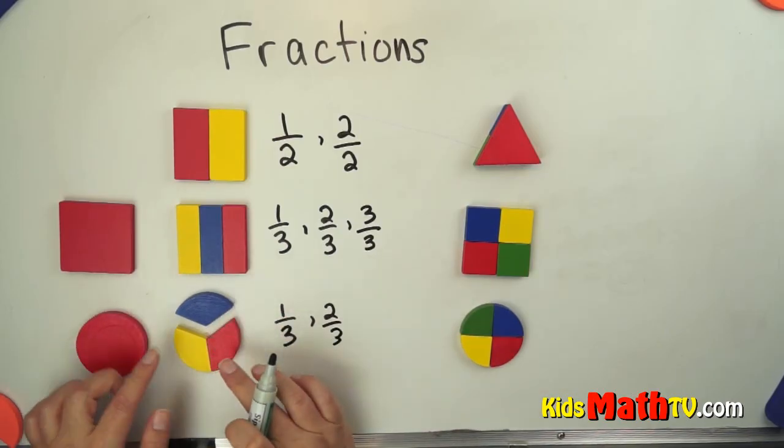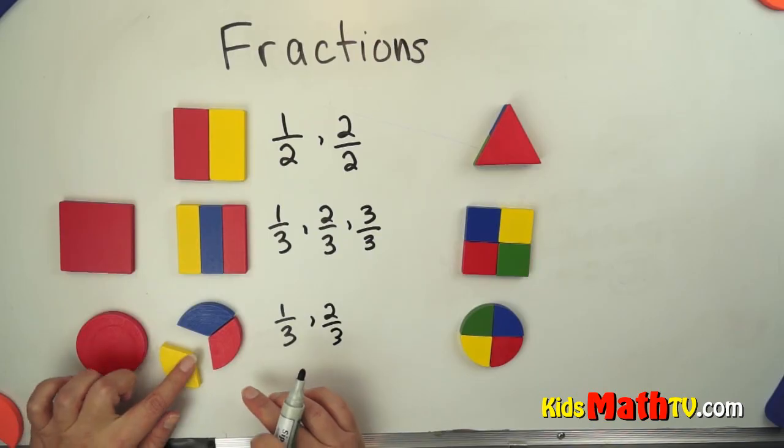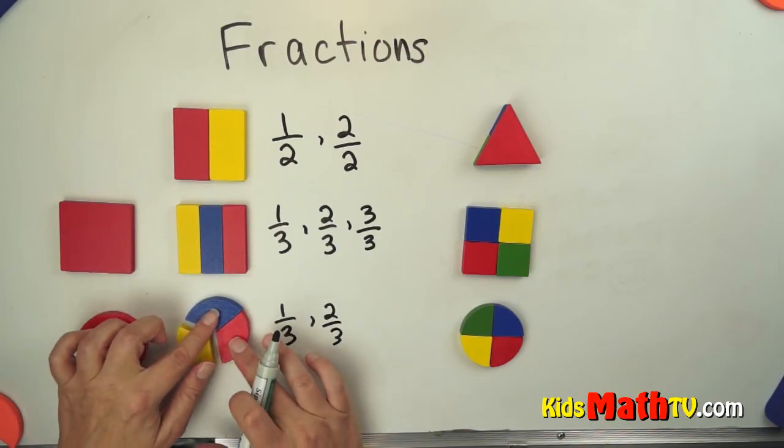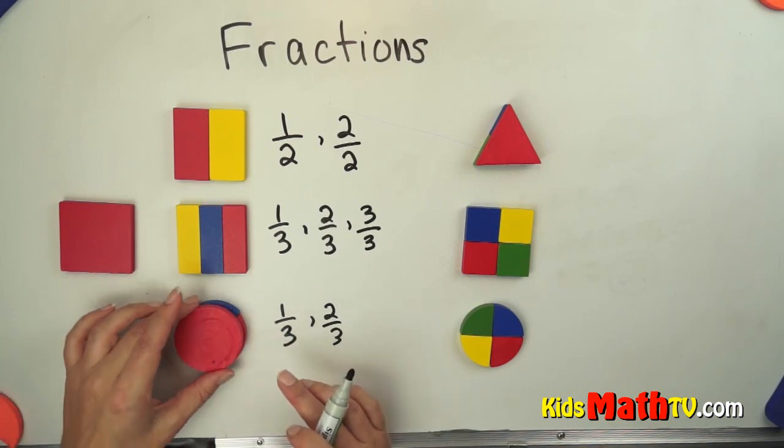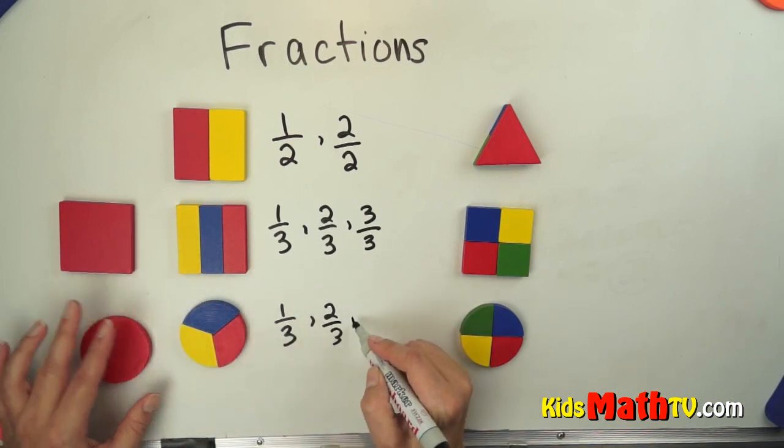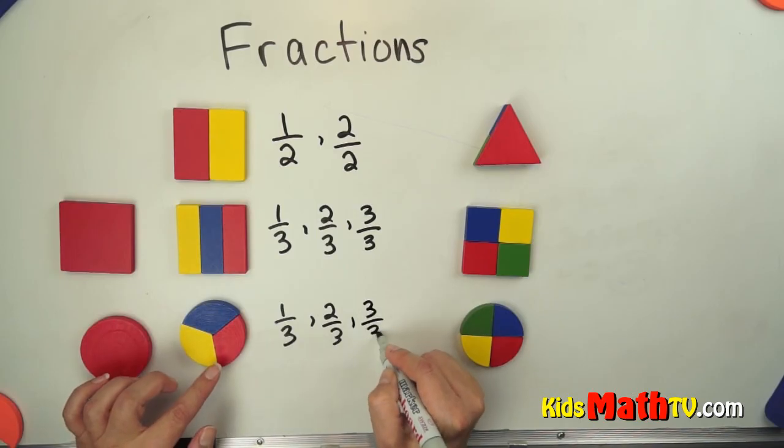So one third or two thirds. I could take one third, one third, doesn't matter, there's two thirds. But it's still the same whole, which would be the whole part, three thirds.